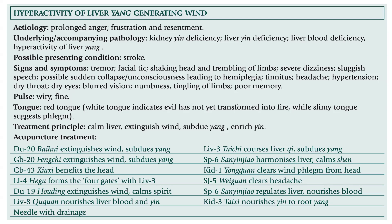Pulse: wiry and fine. Tongue is red. A white tongue indicates the evil has not yet transformed into fire, while a slimy tongue suggests phlegm. Treatment principle: calm the liver, extinguish wind, subdue yang, and nourish yin.